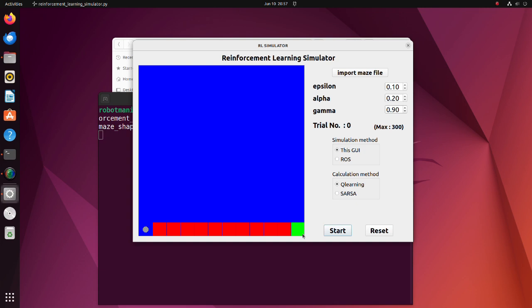The task is to reach the green cell with the shortest path without falling off the cliff. After the maze file was imported, simulation can be executed by pressing the start button. At that moment, simulation parameters and calculation method must be specified.